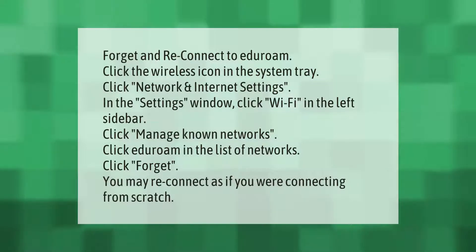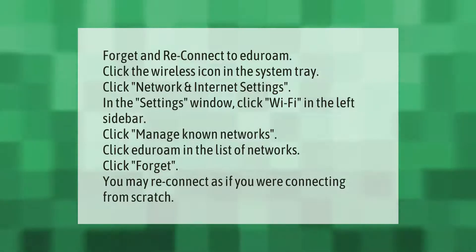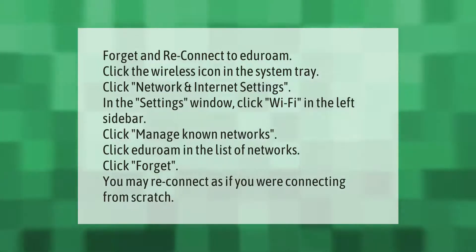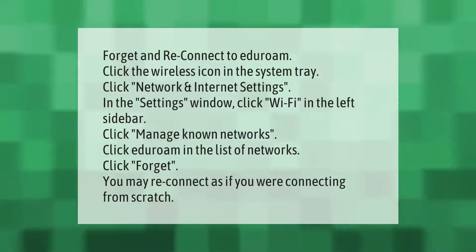To forget and reconnect to eduroam, click the wireless icon in the system tray, then click Network and Internet Settings. In the Settings window, click Wi-Fi in the left sidebar, then click Manage Known Networks. Click eduroam in the list of networks and click Forget. You may then reconnect as if you are connecting from scratch.